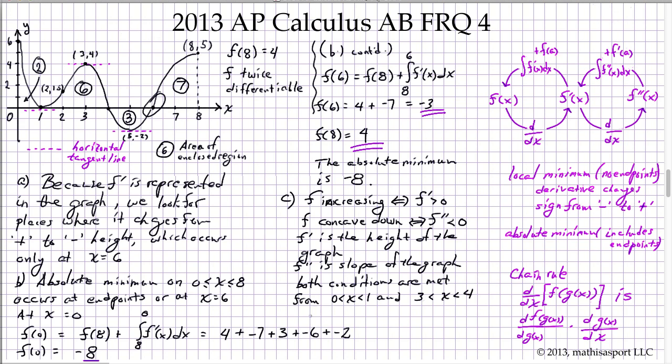Finally, part D. G is f(x) cubed, so g prime of x, applying the chain rule, is 3 times f(x) squared times f prime of x. They want that entire expression evaluated at 3.